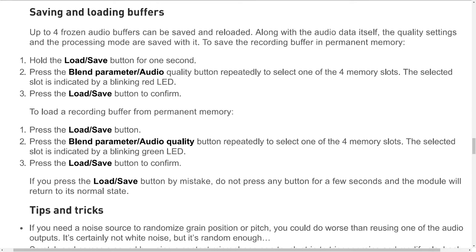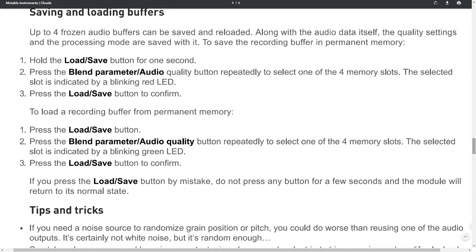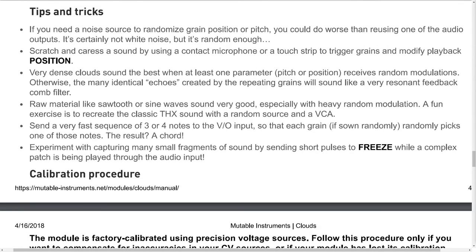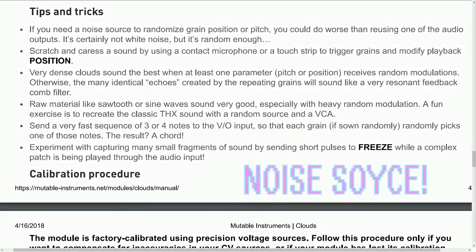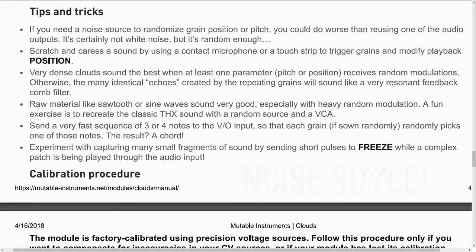If you press the load/save button by mistake, do not press any button for a few seconds and the module will return to its normal state. Tips and tricks: If you need a noise source to randomize grain position or pitch, you could do worse than reusing one of the audio outputs — it's certainly not white noise, but it's random enough. Scratch and caress a sound by using a contact microphone or a touch strip to trigger grains and modify playback position.